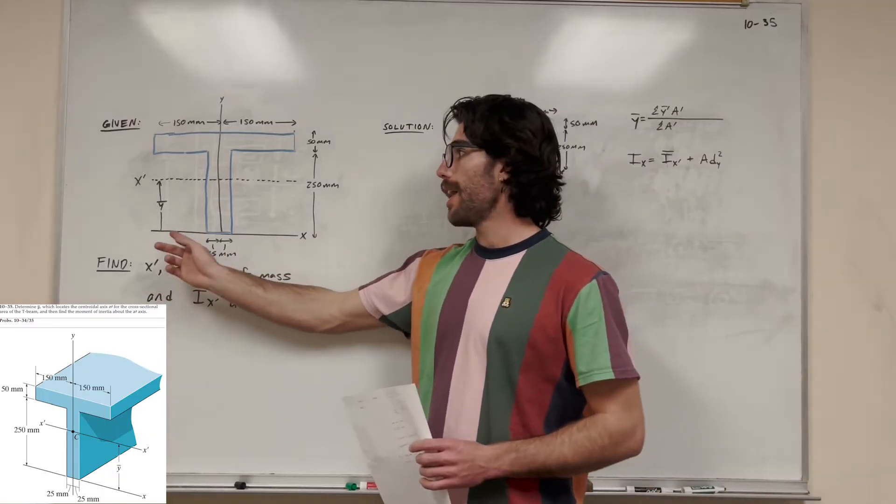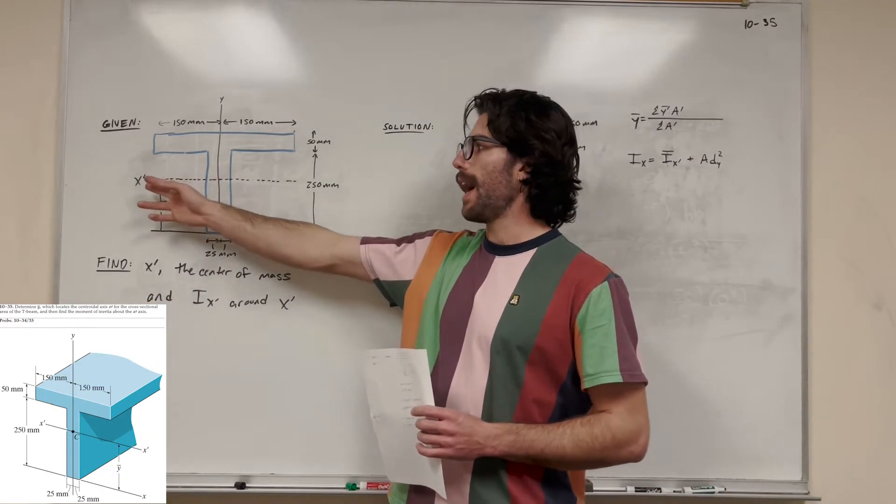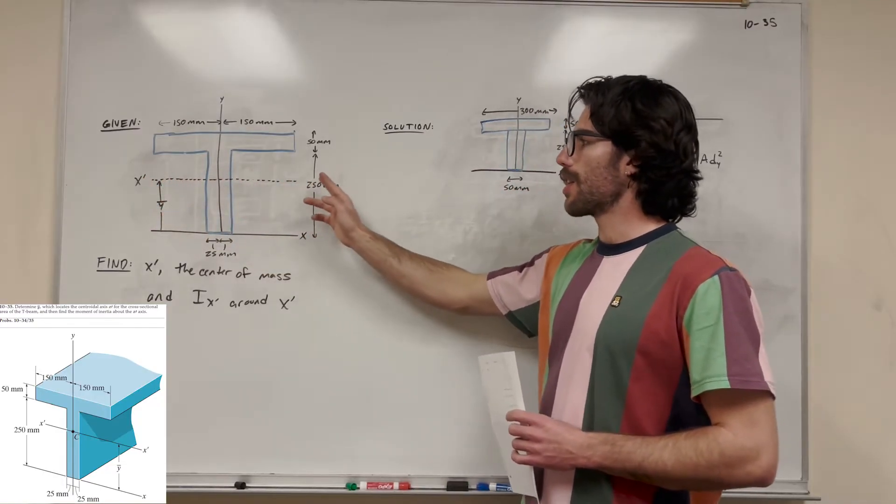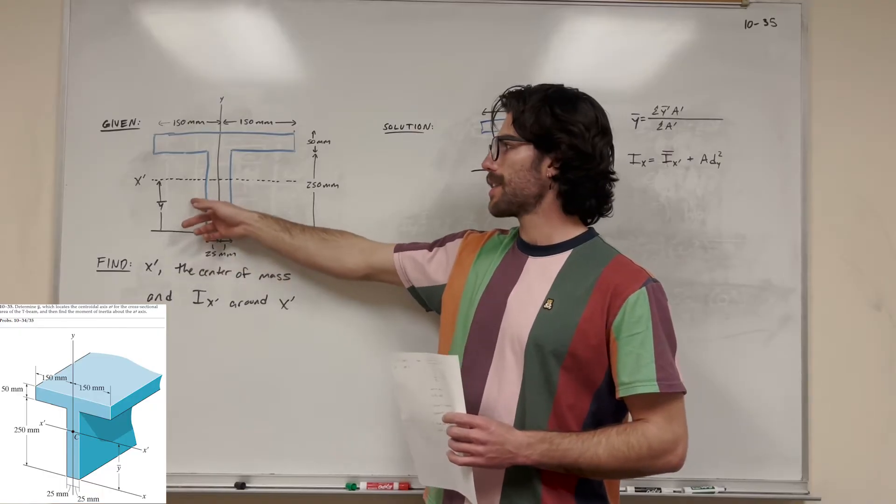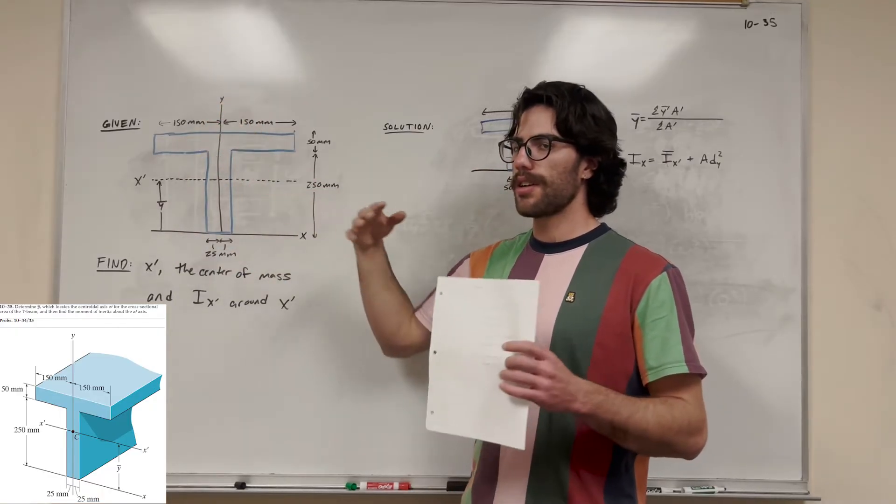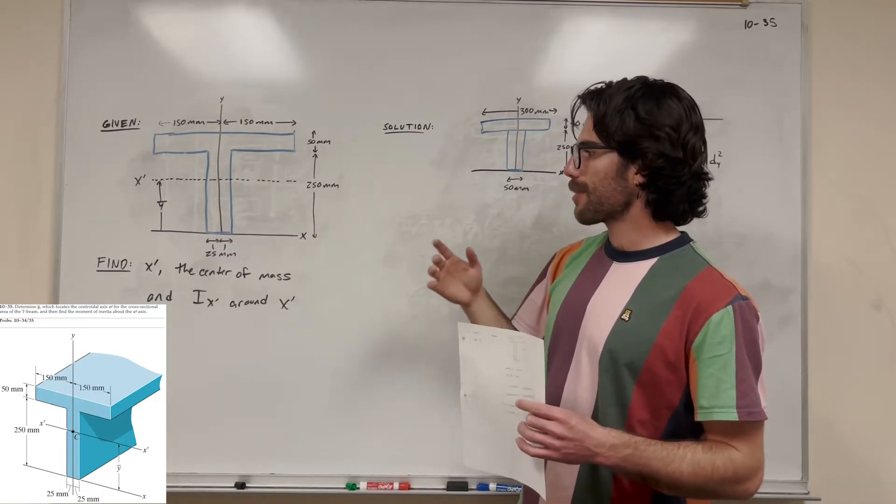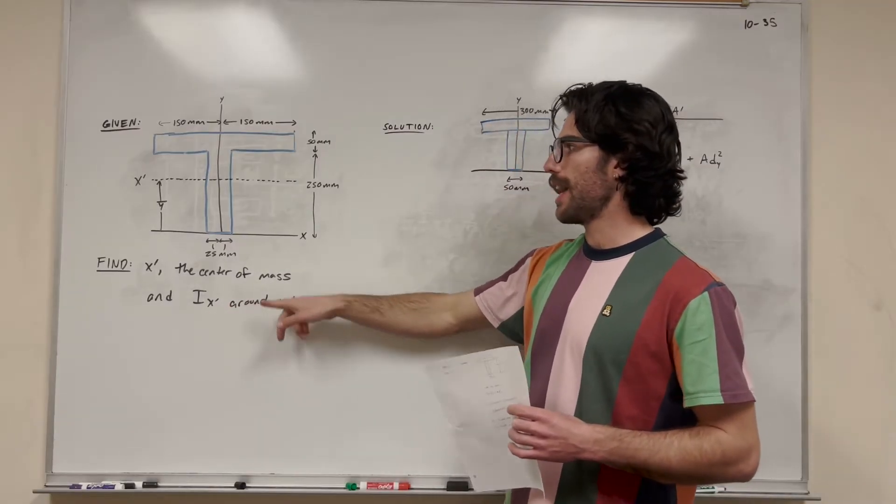We're trying to find x prime, which is basically the center of mass, y bar, along the x-axis, or basically where is the center of mass in the y direction. Where's that axis at? Then we're going to find the moment of inertia around x prime.